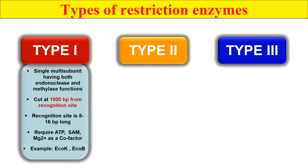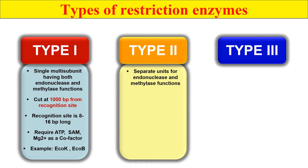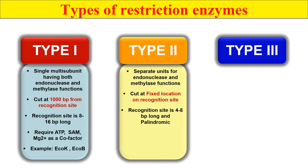In the case of Type II Restriction Enzymes, these are highly specific. They have separate units for endonuclease activity and methylase activity. They cut within their recognition or restriction site — they cleave at a fixed location on the recognition site. Their recognition site is generally 4 to 8 base pairs long and is palindromic in nature. They only require magnesium ions for their activity. Examples of Type II are EcoRI, BamHI, HindIII, and many more.